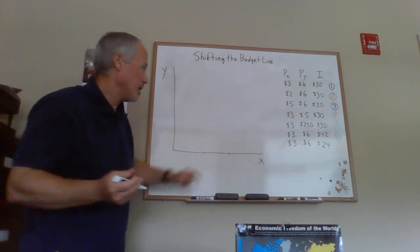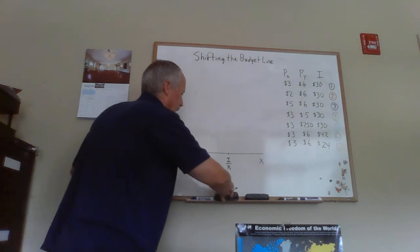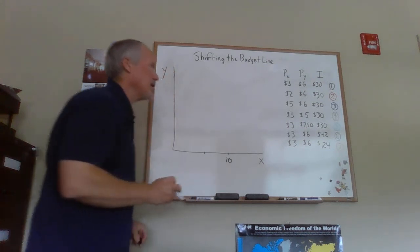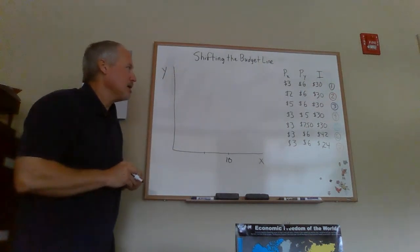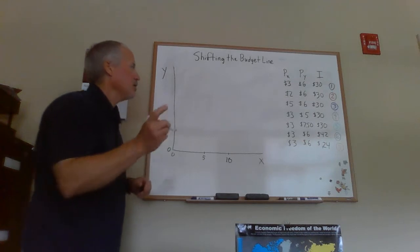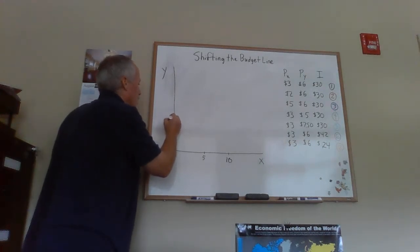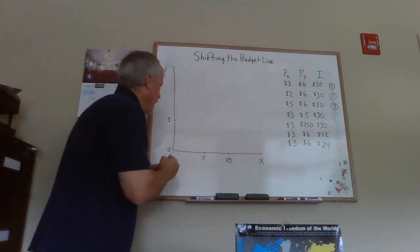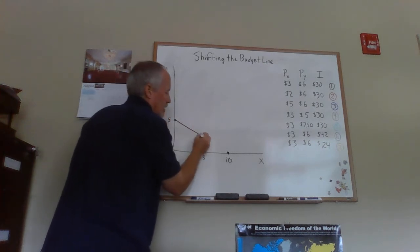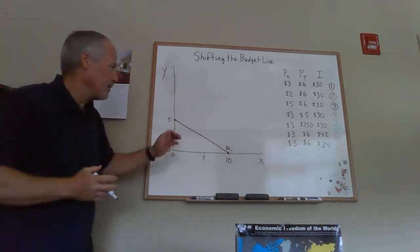That's 30 divided by 3, which is the income divided by the price of X. In this first case, that's 30 divided by 3, so that's 10. If you spent all of your money with the first budget line on X, you could buy 10 units of X, and then you'd have zero units of Y. If you spent all of your money on Y, well, the price of Y is $6, so 30 divided by 6, you'd be able to buy 5 units of Y. So our first budget line at 5 and 10 is going to look like this, and that's BL1.